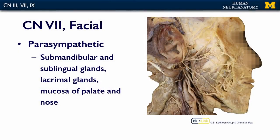Cranial nerve 7 carries parasympathetic — visceral motor — fibers to the submandibular and sublingual glands, the lacrimal glands, and the mucosa of the palate and the nose. So anything in your face that runs, drips, or is wet is going to be innervated by the parasympathetic component found in the facial nerve.